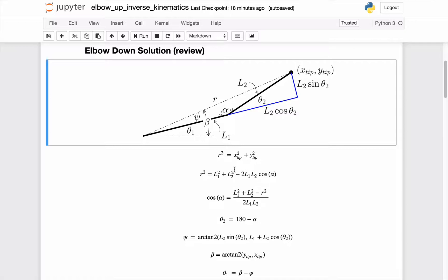Knowing R-squared, we can then go into the law of cosines and solve for the cosine of alpha. So this is the opposite side. L-1 and L-2 become the two adjacent sides. So R-squared is equal to L-1-squared plus L-2-squared minus 2 L-1-L-2 cosine alpha. Do a little bit of algebra and solve for the cosine of alpha. Once I know alpha and the elbow-down solution, theta-2 is just 180 degrees minus alpha.